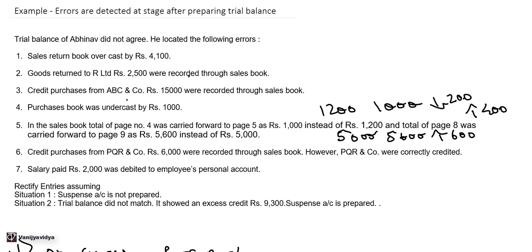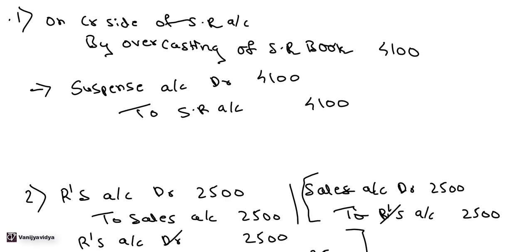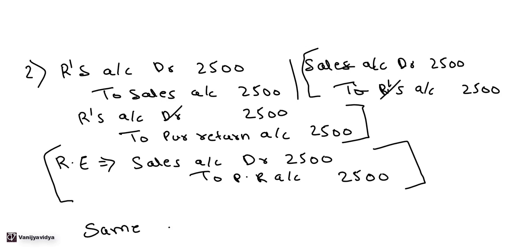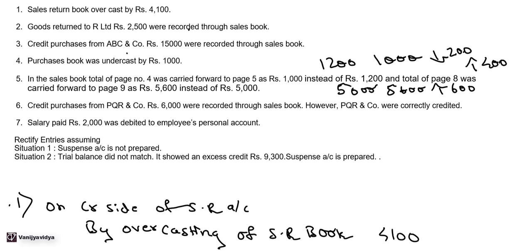Second transaction: goods returned to AR Limited Rs. 2,500 recorded through sales book — purchase return recorded as sales. Rectification entry: Sales Account Debit Rs. 2,500 to Purchase Return Rs. 2,500. This is a complete rectification entry, not a partial entry, so there was no difference in the trial balance because of this error. This entry remains the same even in Situation 2 when the suspense account is created.